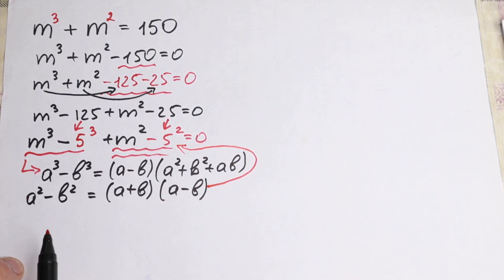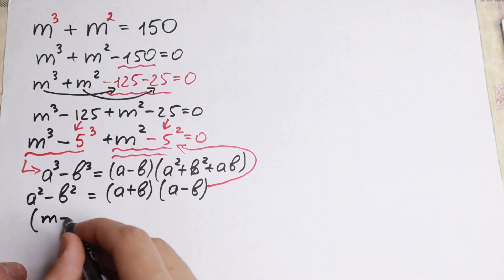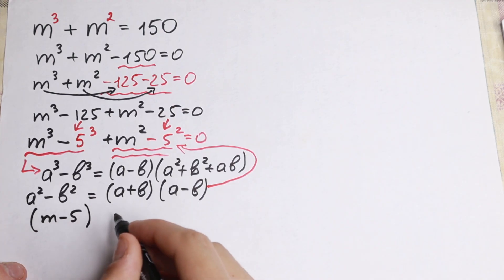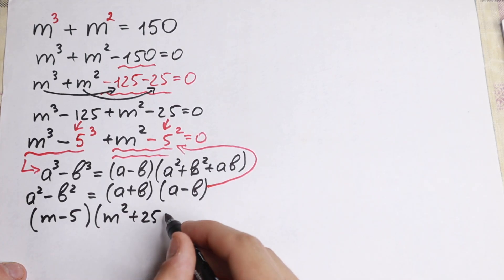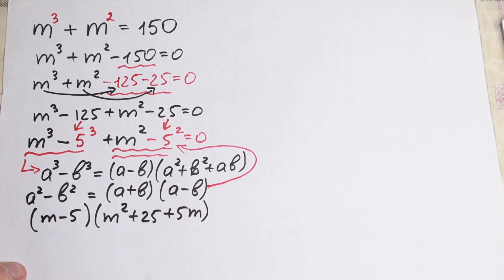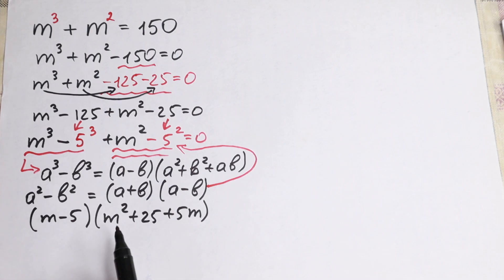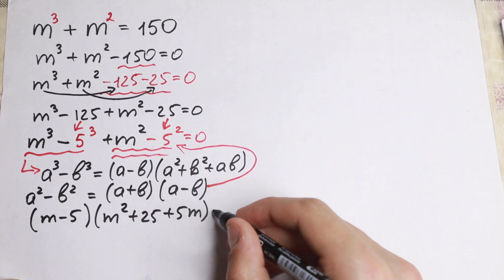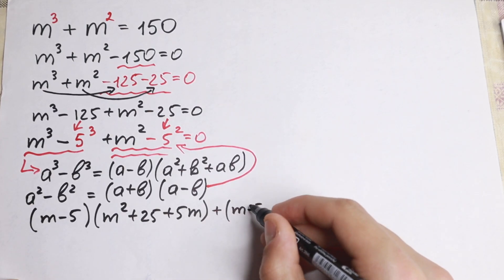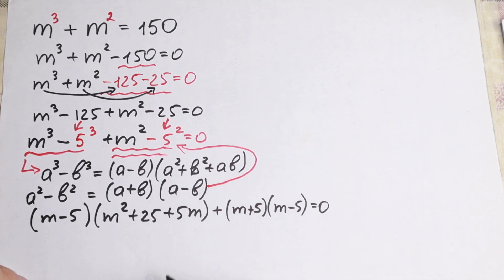Let's apply the difference of two cubes formula. We will have (m minus 5)(m² plus 25 plus 5m). And of course we need to apply the second formula for the difference of two squares, which gives us plus (m plus 5)(m minus 5) equal to zero.